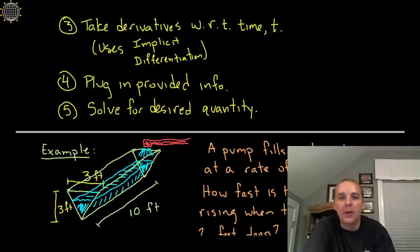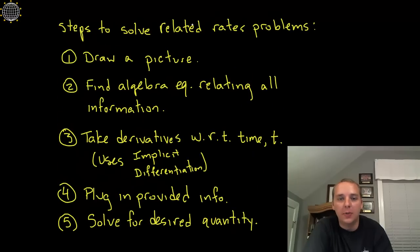So let's review just real briefly how we solve related rates problems. Step 1: we draw a picture if one is not provided. It actually was here so we can just use the picture that we already have.